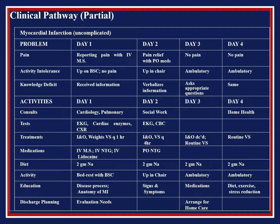This is an example of a partial clinical pathway for uncomplicated myocardial infarction, with a description of the problems and activities in the left column. From left to right, each column represents what will be done on each consecutive day.